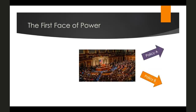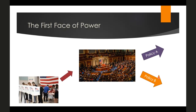If we remember the model of the first face of power, it's this open decision-making arena — we can stylize this as Congress — deciding between policy A and policy B, with roughly even division between representatives and senators. Our question is: how can concerned citizens, interest groups, and corporations influence decision-making? How can they get people who would vote for policy A to support policy B?